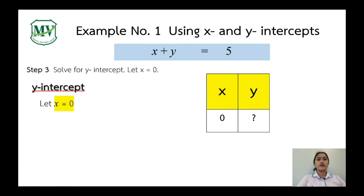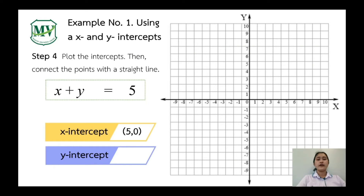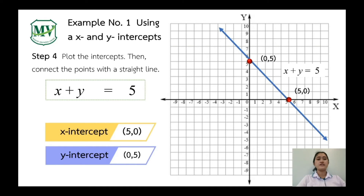Step 3: solve for the y-intercept. In solving for the y-intercept, x is always 0. So, 0 plus y equals 5; y equals 5. Therefore, our y-intercept is (0, 5). We can now plot these points on our Cartesian plane. Our x-intercept is (5, 0) and our y-intercept is (0, 5). Connect them with a straight line. This is the graph of x plus y equals 5.